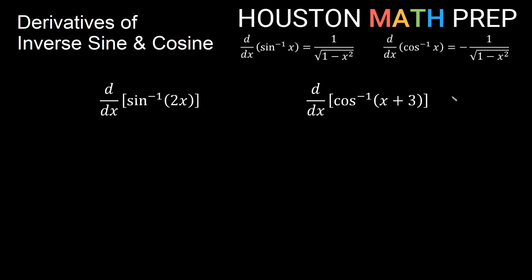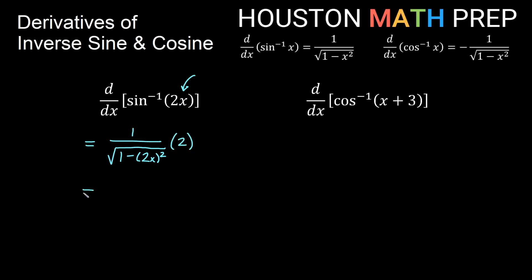We've got our two formulas side by side — you can see they're very similar. Now let's find some derivatives involving the chain rule. For the derivative of inverse sine of 2x, the inside of the function is 2x instead of x. Using the formula, this is 1 over the square root of 1 minus (2x) squared, then multiply by the derivative of 2x which is 2. Simplifying, we get 2 over the square root of 1 minus 4x squared — don't forget to square both the 2 and the x.